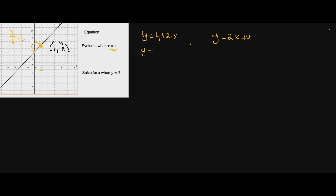Let's use our equation to verify. We have y equals four plus two times one. We always do multiplication first: two times one is two, and four plus two gives us six. So when x equals one, y equals six, or written as the point (1, 6) — which is exactly what is shown on the graph.